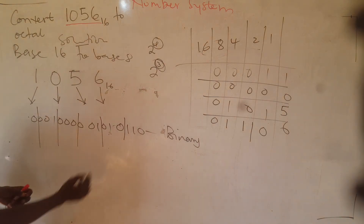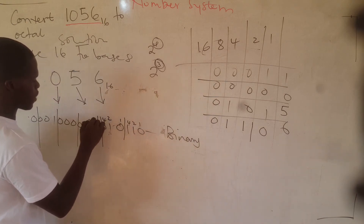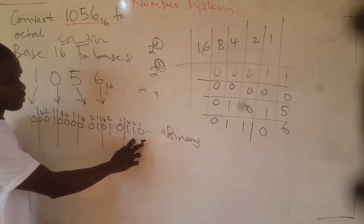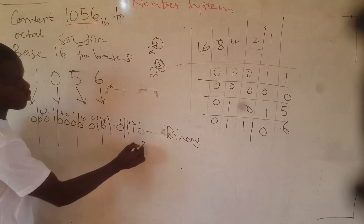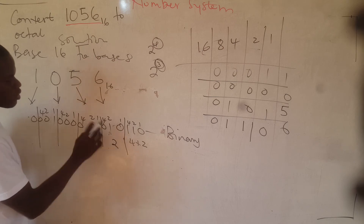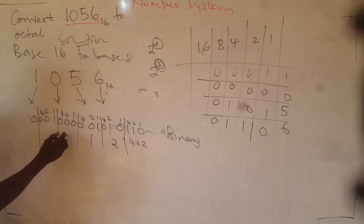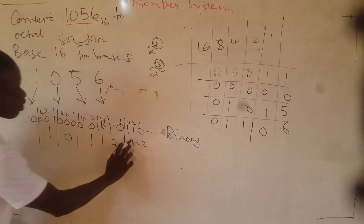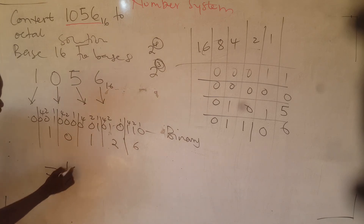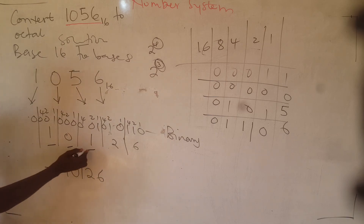We subject each group to weights of 1, 2, 4. For each group: multiply by 1, 2, 4 and add. First group gives 0. Second group: 2 times 1 is 2, 4 times 0 is 0 — that gives 2. Third group: 1 times 1 is 1, giving 1. Fourth group: 4 times 1 is 4, 4 plus 2 is 6 — so 6. The answer we have is 1, 0, 1, 2, 6, which is in base 8.